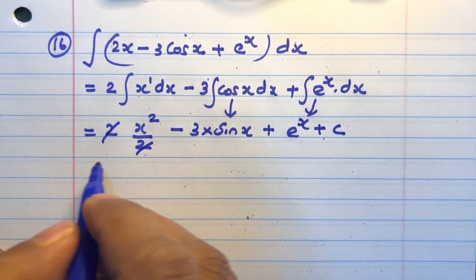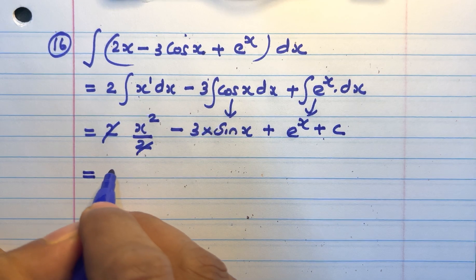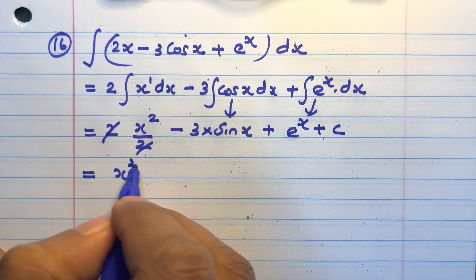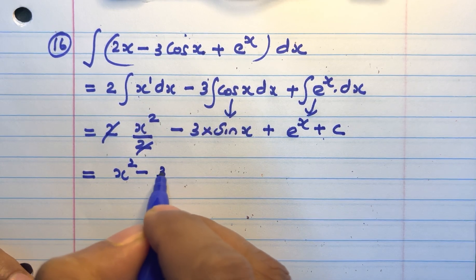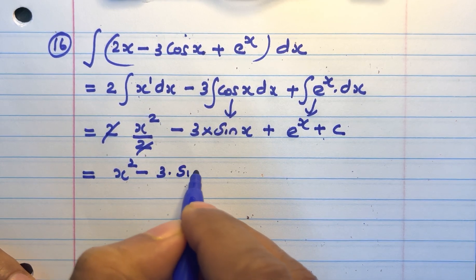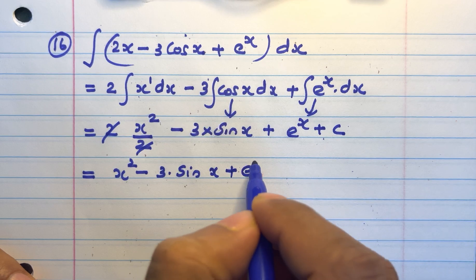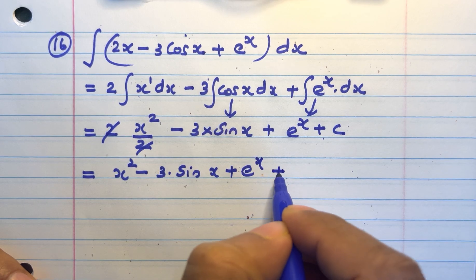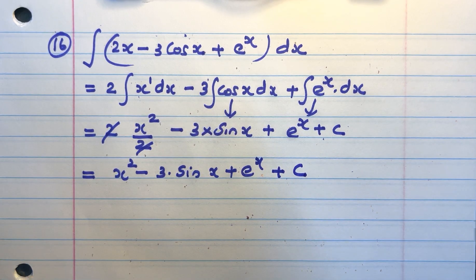2 and 2 we can cancel. So the answer is x squared minus 3 sinx plus e raised to x plus c.